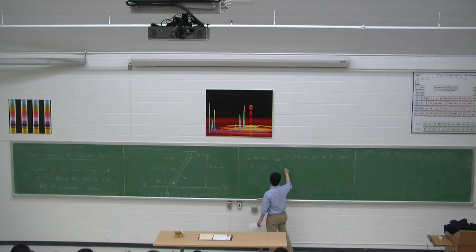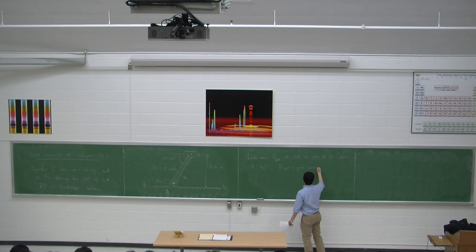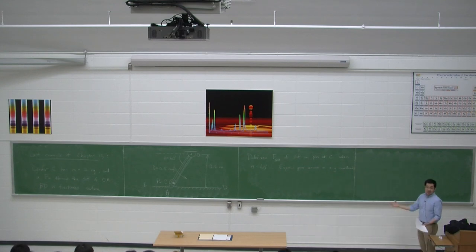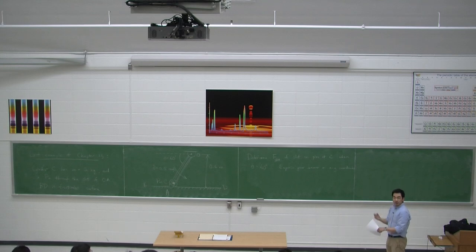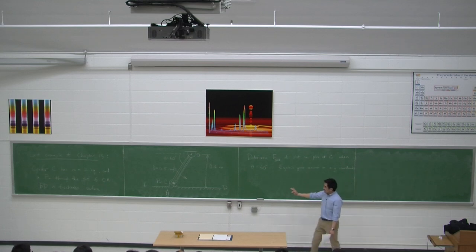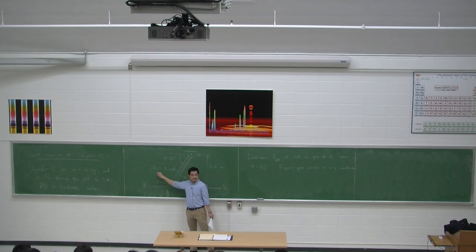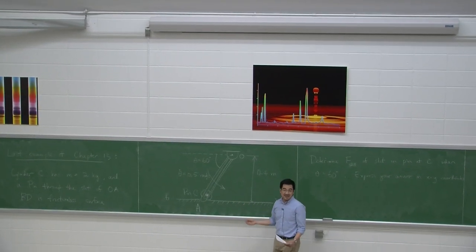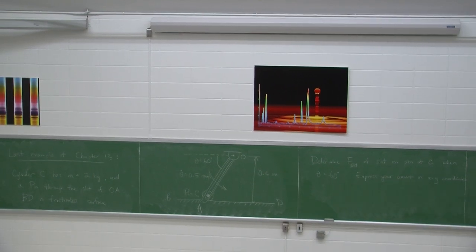Express your answer in x, y coordinates. First, initial thoughts on the coordinate system: you're told to give the answer in x, y, but you've been given information like theta-dot. As this slot rotates, there's lots of information happening in both r and theta. So it appears this is the type of problem where you first find information in r-theta, then convert to x, y. That seems pretty reasonable. Let's start with the free body diagram.